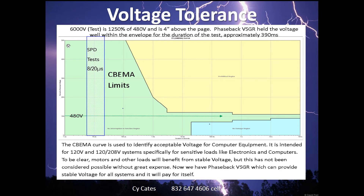Six thousand volts is 1,250 percent, so it's way off of this page. To be clear, all electrical loads would benefit from stable voltage, but it's been very expensive in the past to deal with this with motors and other general electrical loads.